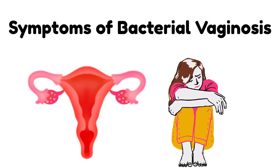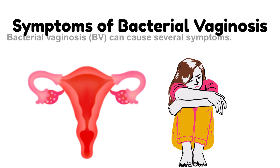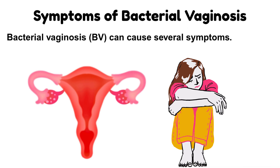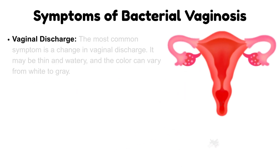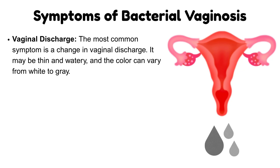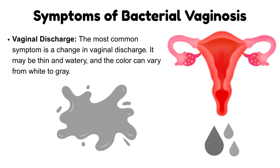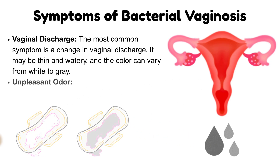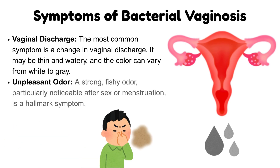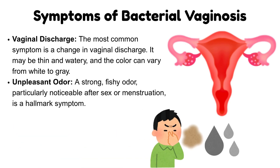Symptoms of bacterial vaginosis can include: vaginal discharge — the most common symptom, often thin and watery, with color varying from white to gray. An unpleasant odor — a strong, fishy odor particularly noticeable after sex or menstruation — is a hallmark symptom.